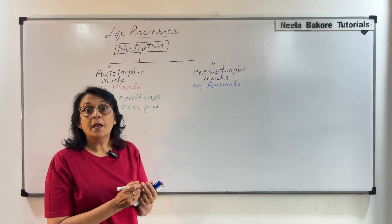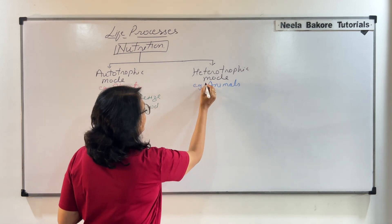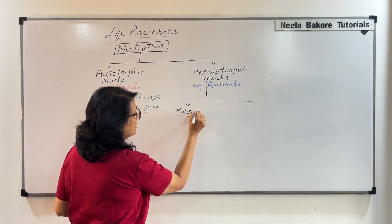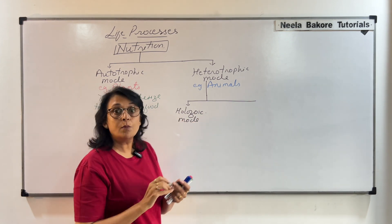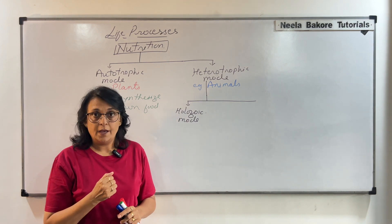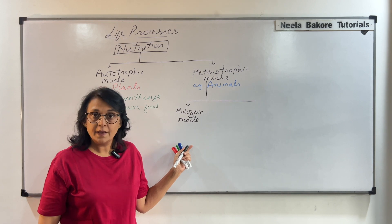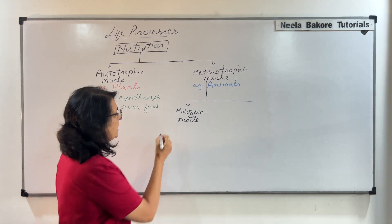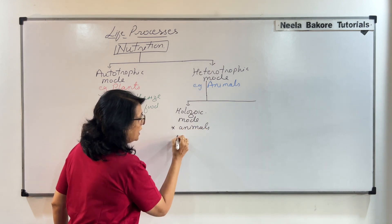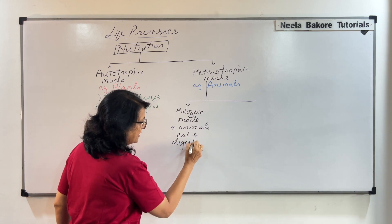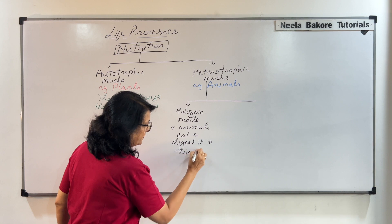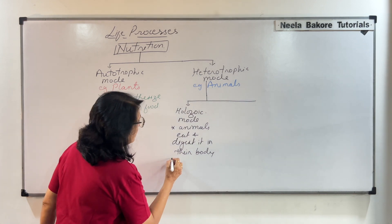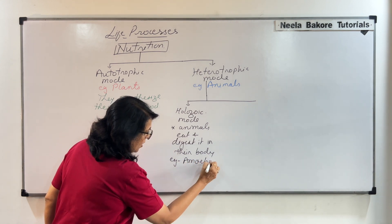Heterotrophic mode of nutrition can further be divided into various categories. The first is holozoic mode of nutrition. Holozoic mode means when an animal eats something — it goes into the digestive system, is broken down into simpler forms, and then used. This can be seen in simple organisms like amoeba or in humans.